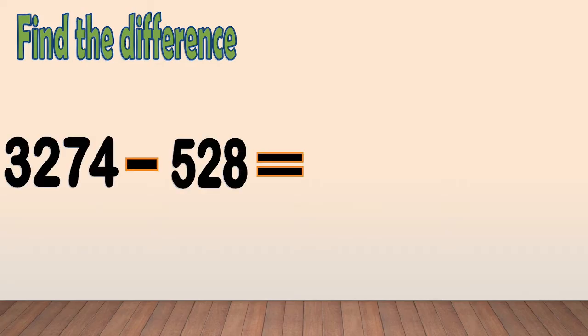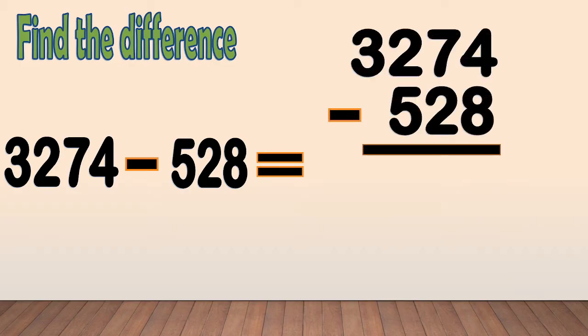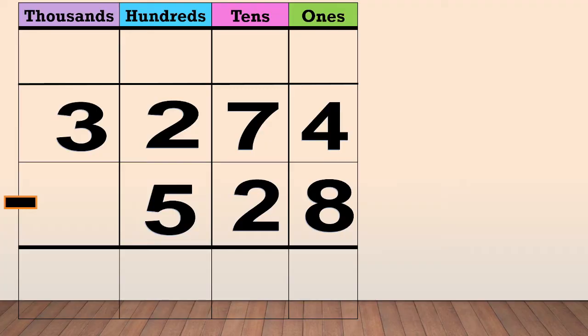Find the difference: 3,274 minus 528. Arrange the numbers in columns. Place each digit in a column based on its place value.